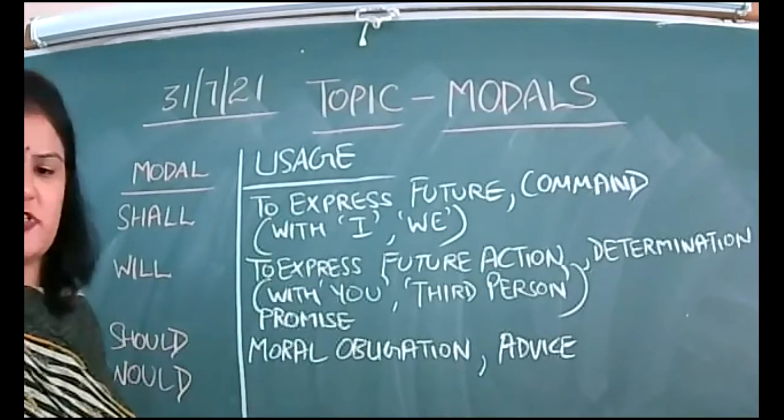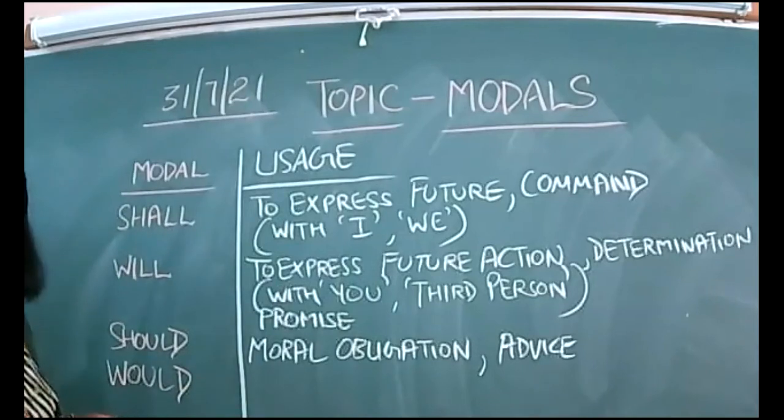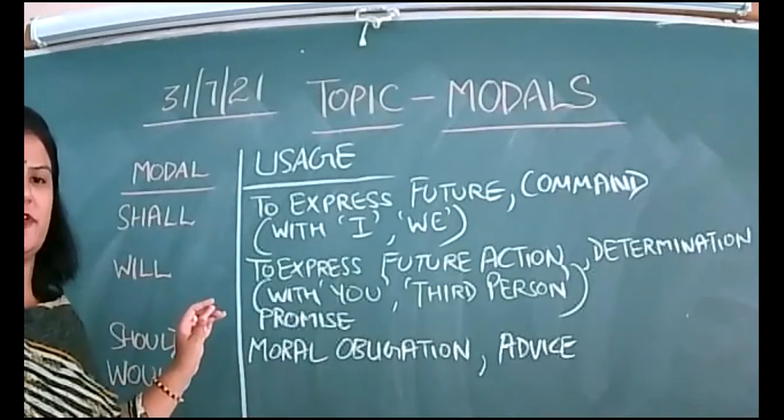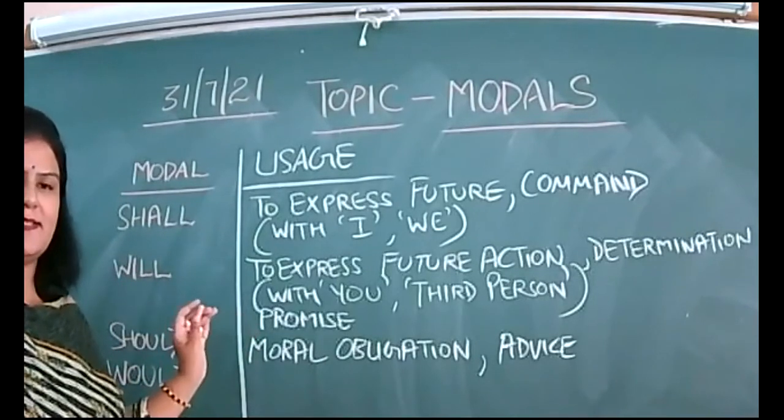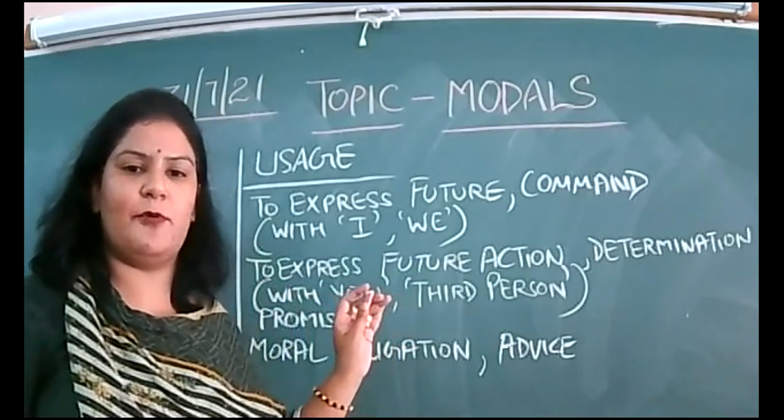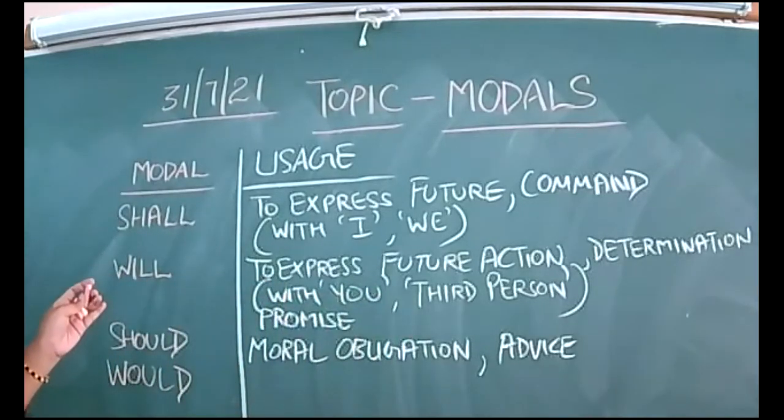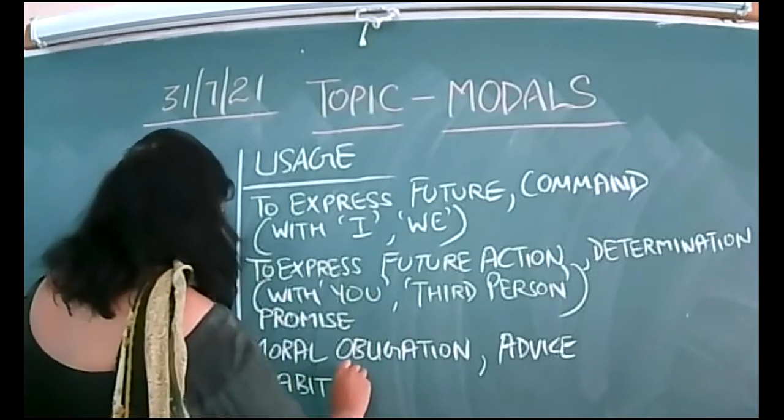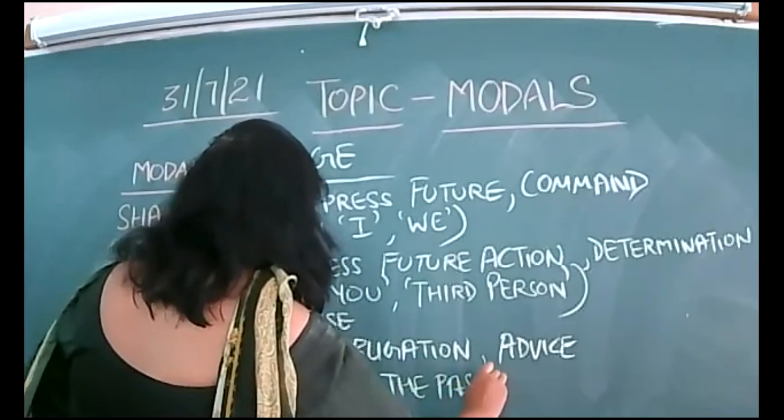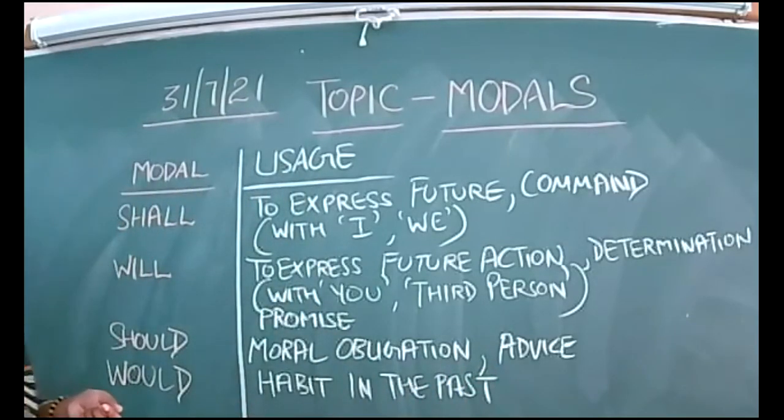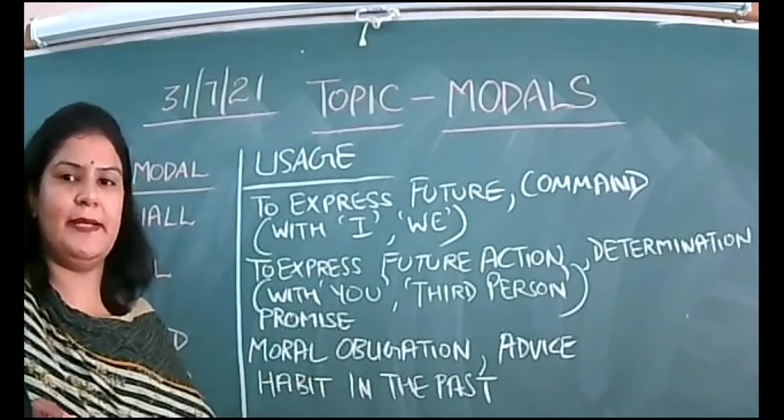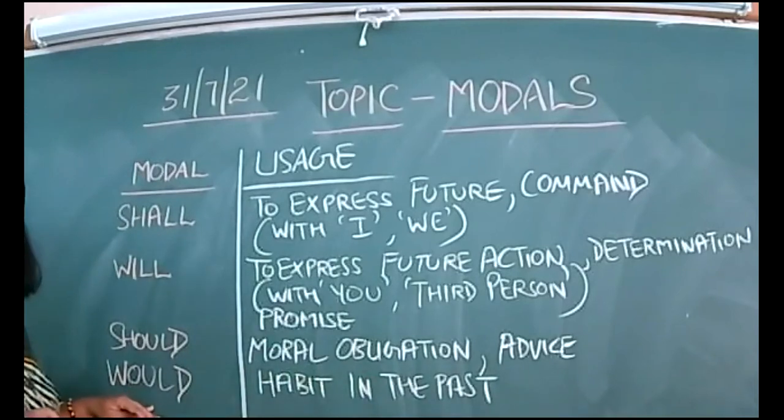So then we have would. Past form of will is would. I won't be writing all on the board. I would be sharing the screen with you soon. But let me tell you the way you will be writing in your notebook. Clear? Don't write complete sentences. Write modal on one side, usage on the other side. This should be there in your fair notebook. Exercises need not do in the fair notebook, you will be doing directly in the book. So what is the past form of will? It is used to express a habitual action in the past or habit in the past.